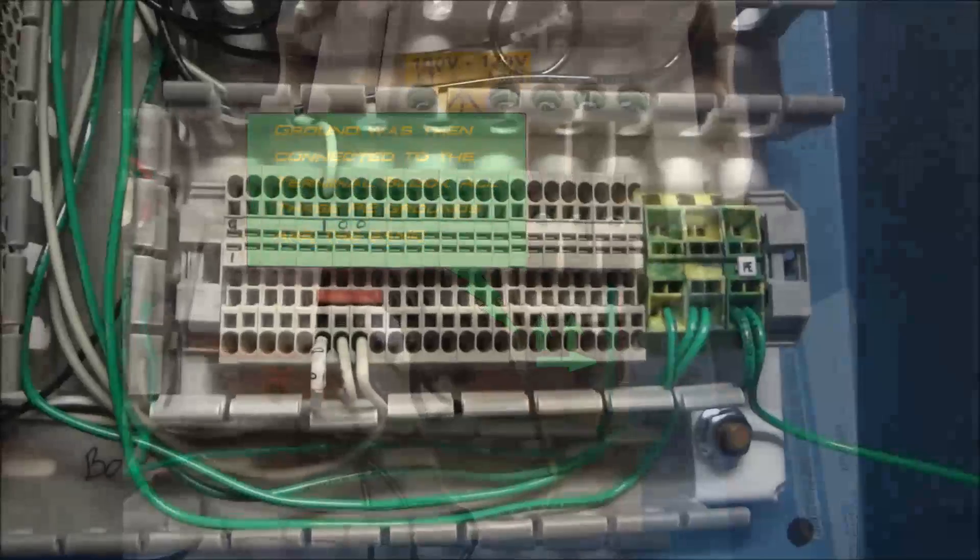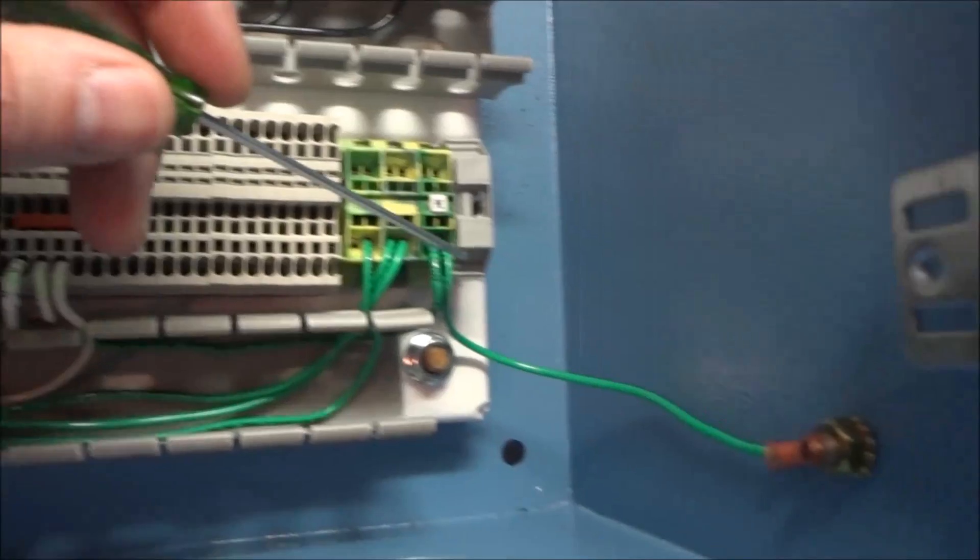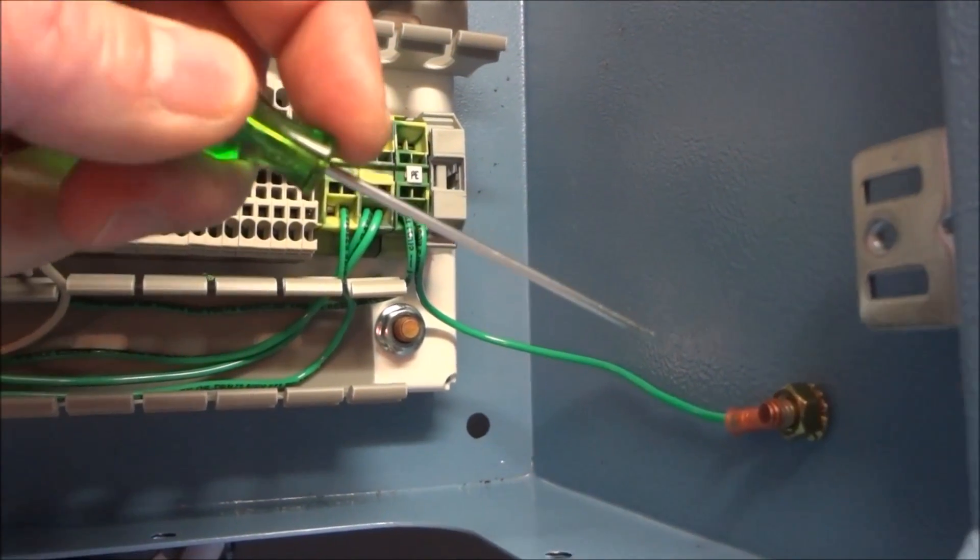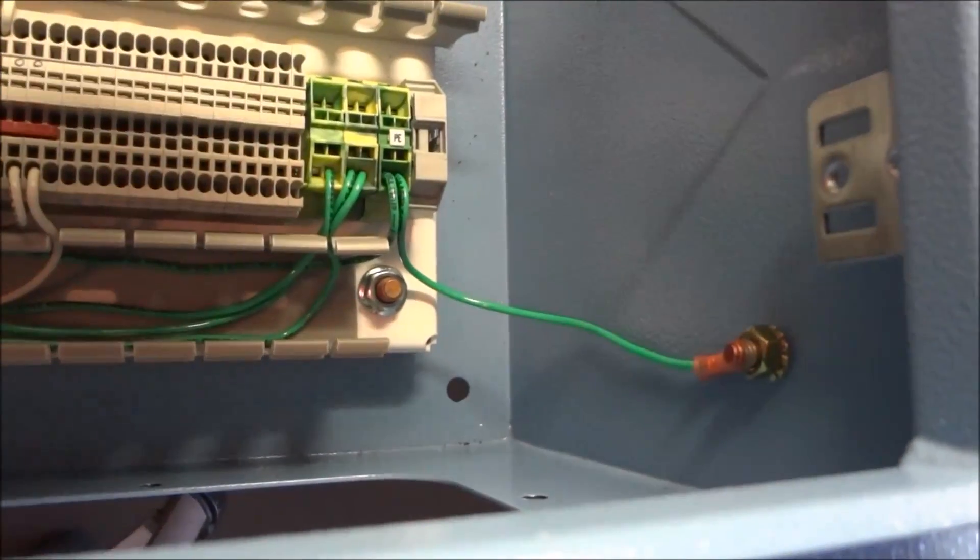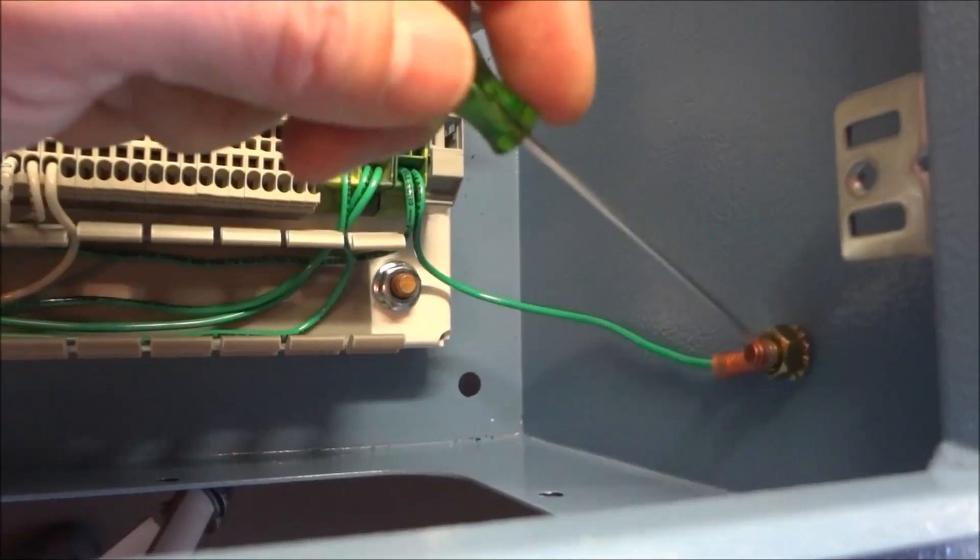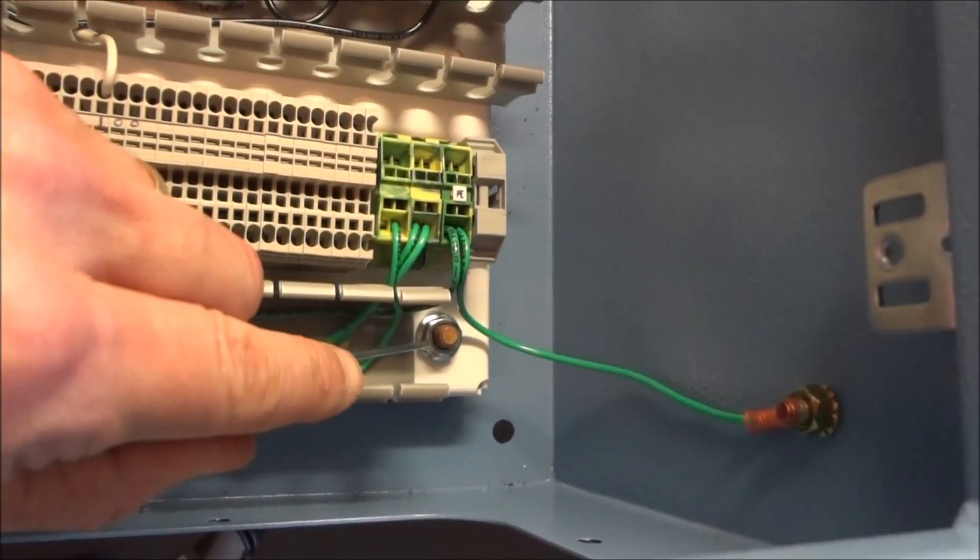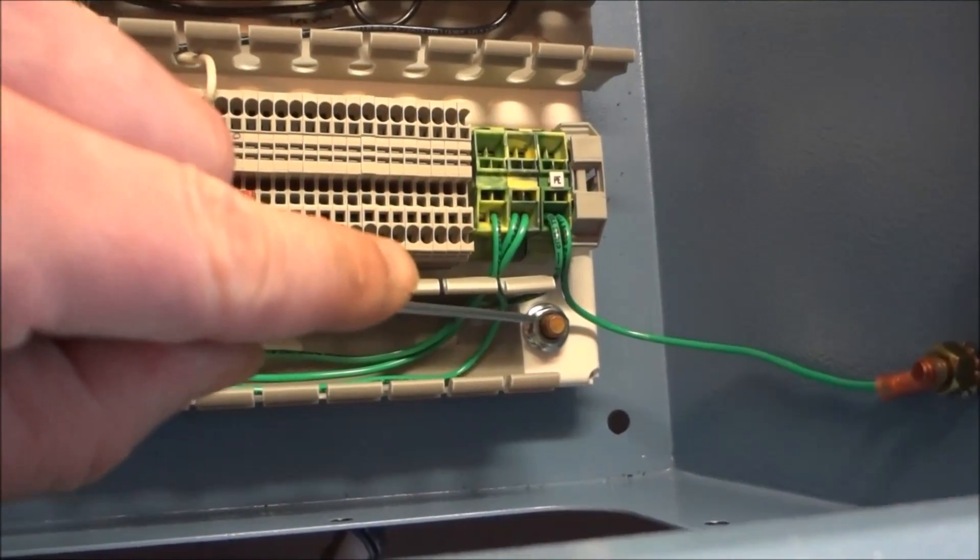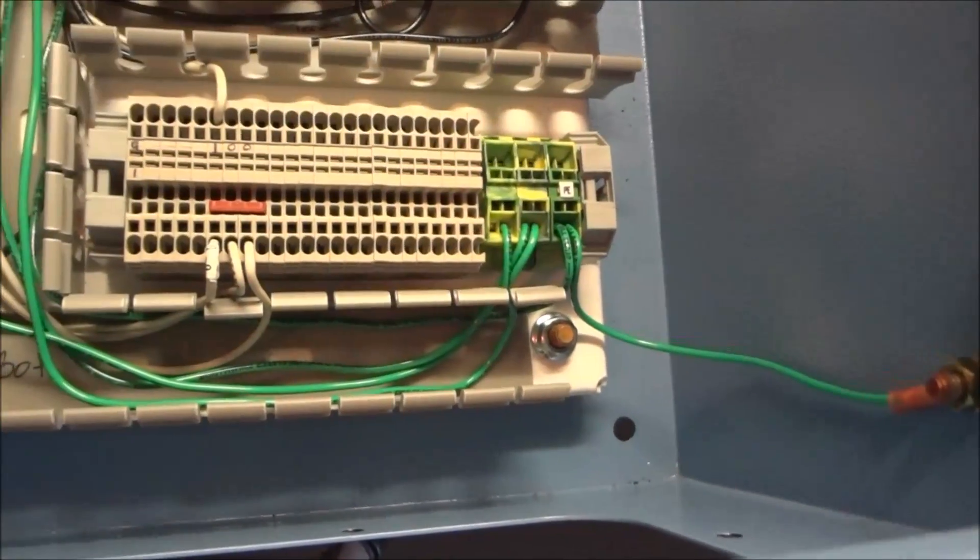And after we connect to our ground terminal, I also ran a wire with a crimp connector over to this stud that's on the cabinet to complete this ground. Now the back plate is grounded by the bolts that hold it to the enclosure. And so this just kind of ties everything together.